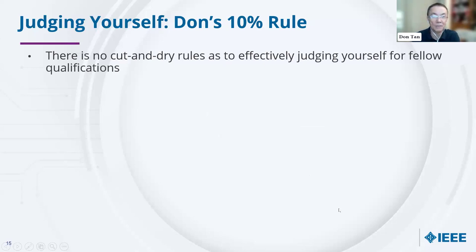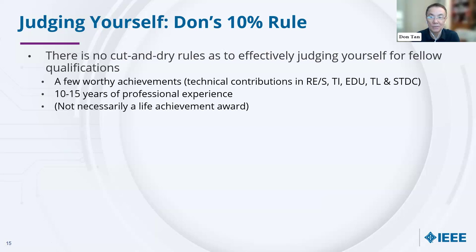Once you have a plan, the next big question is how to judge yourself. There's no cut-and-dry rule for effectively judging your qualification. Typically, you should have a few worthy achievements — technical contributions as a researcher, engineer, scientist, technical innovator, educator, technical leader, or standards contributor. The recent change: the word used to be 'or,' now it's 'and.' That single word difference makes a big difference. You also need 10 or 15 years of professional life experience.